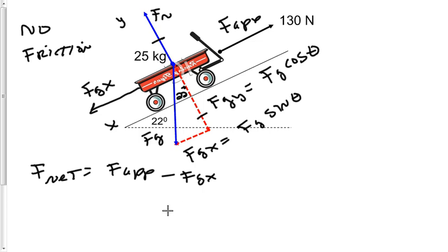So let's get some values for this. Well, in force net, we will put 25a, our force applied equals 130 minus our force gravity x. Well, force gravity is always mass times acceleration. So I'll put 25 times 9.8. Our acceleration of gravity is 9.8.